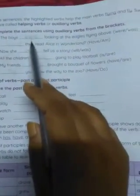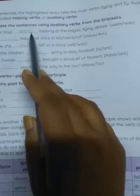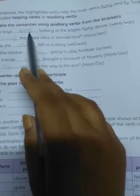Okay, so complete the sentence using auxiliary verbs from the brackets. Number 1. The boys where? W-E-R-E.